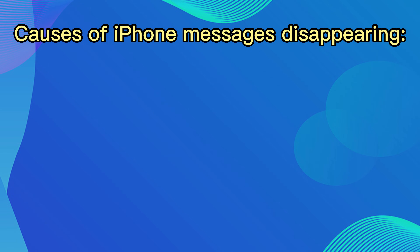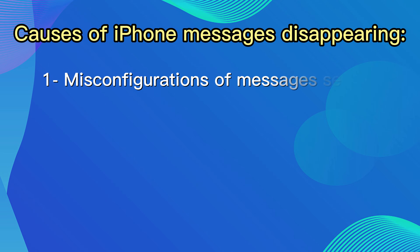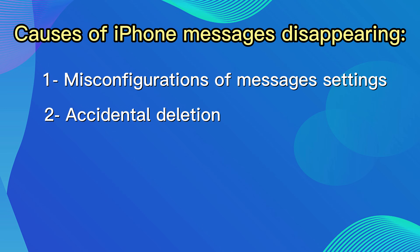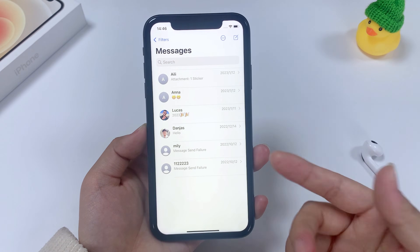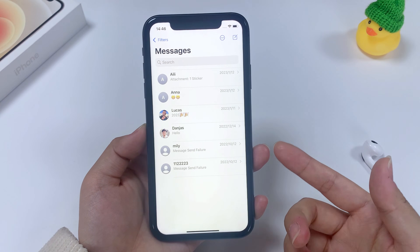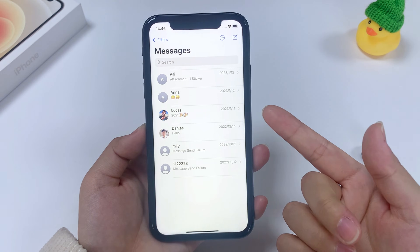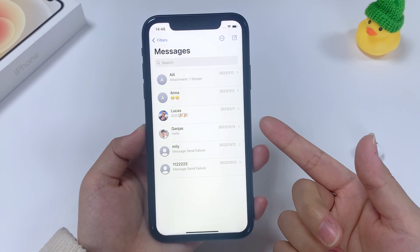There are several reasons why the iPhone text disappearing issue happens. It's mainly because of misconfigurations of message settings for how long to keep the threads on the device, accidental deletion of texts from the inbox, unexpected iOS software update errors, network issues rendering iMessages to disappear, as well as many other potential causes. Look at the root cause that makes the texts or iMessages disappear from iPhone, and you'll quickly find the right way to get back the messages.